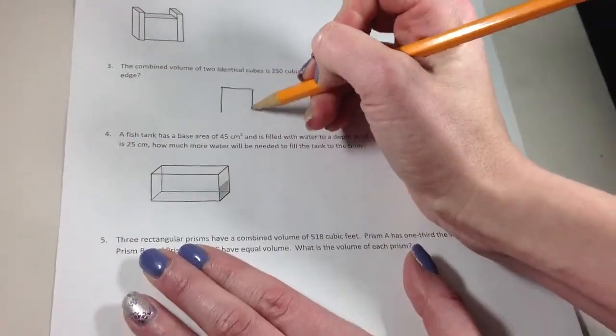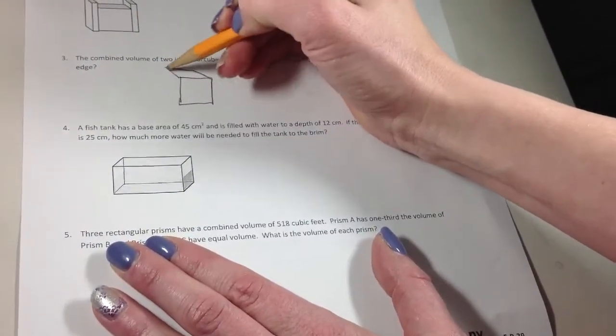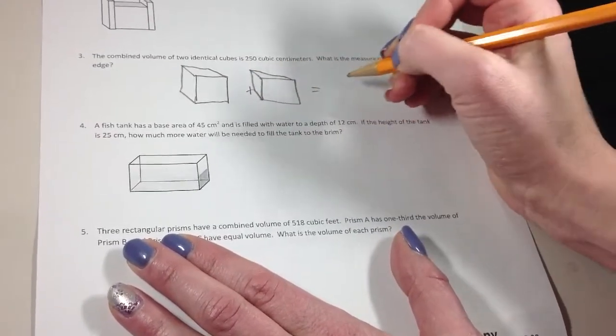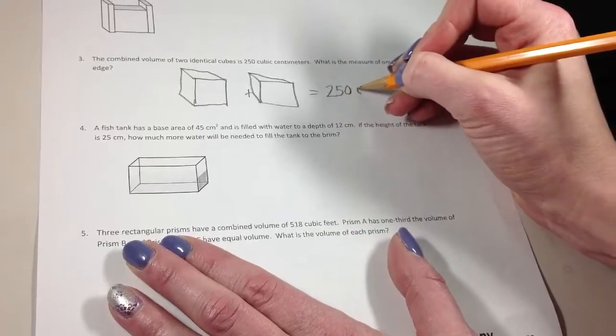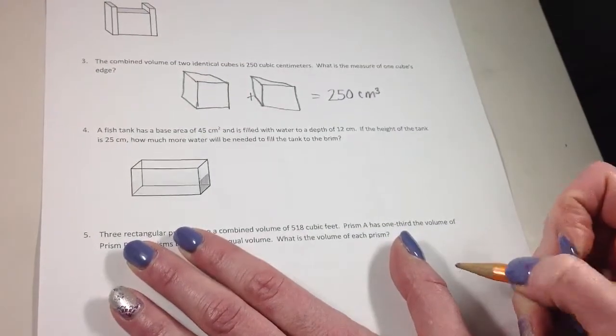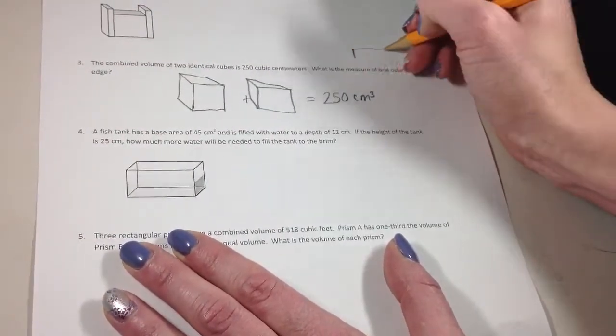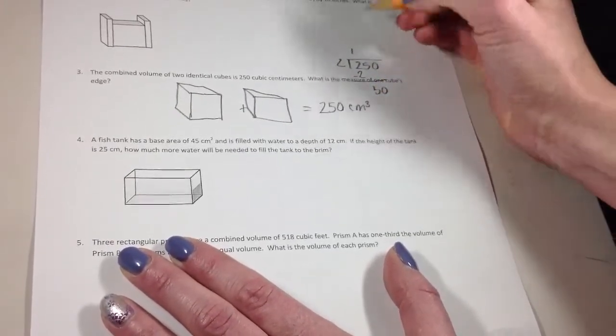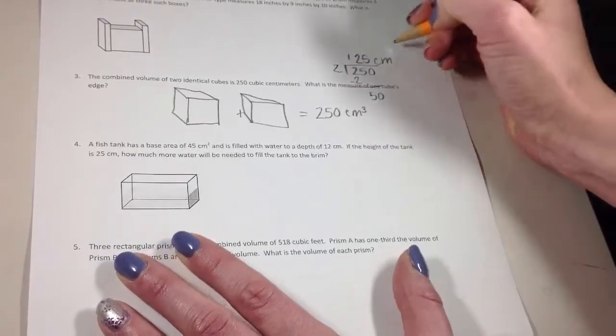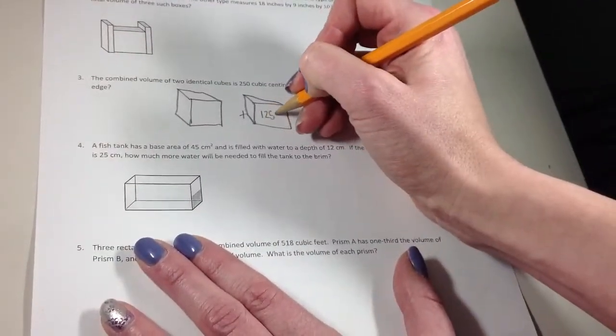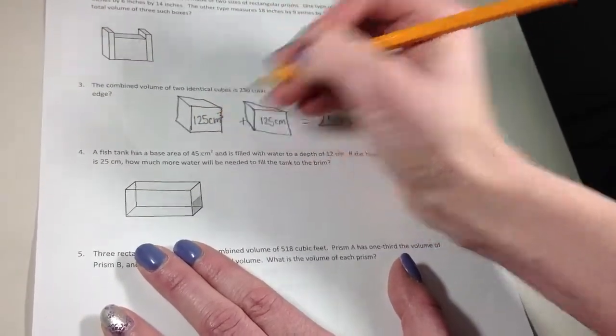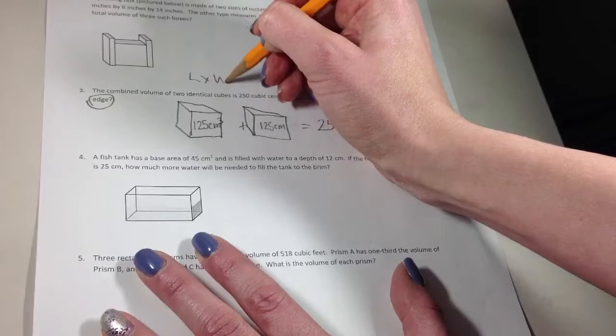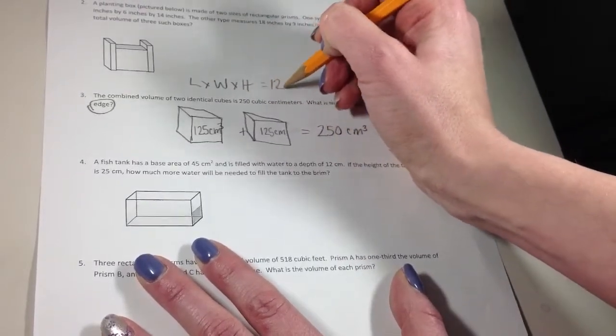Okay? The first one we'll look at is number 3, which we started together in class. So you have two identical cubes. The cubes are exactly the same. And we know that together, if I add them together, I get 250 cubic centimeters. So if I want to figure out what each of them is, I can split that in half. So 250 split in half is going to be 125 centimeters cubed. But the question asks, what's the measure of one cube's edge?